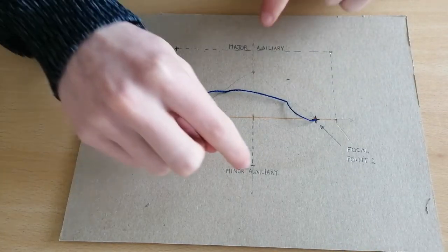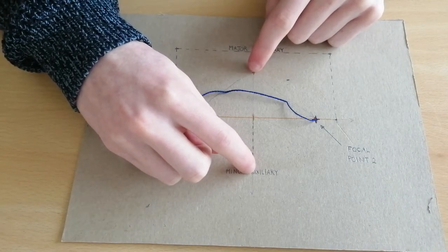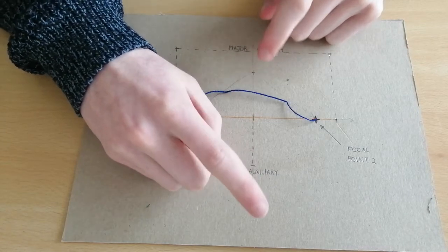Now our second feature is our minor auxiliary, and this is the smallest length that our ellipse can be. And this is found along our minor axis.